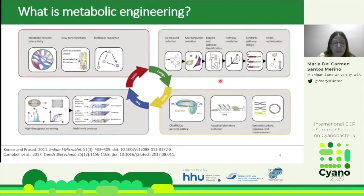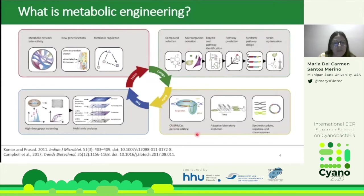With all this information, we jump to the build step, where we construct the strain with all the modifications we want to introduce. In this step, there are new tools we can use such as CRISPR-Cas systems, adaptive laboratory evolution, and even synthetic codons or chromosomes.